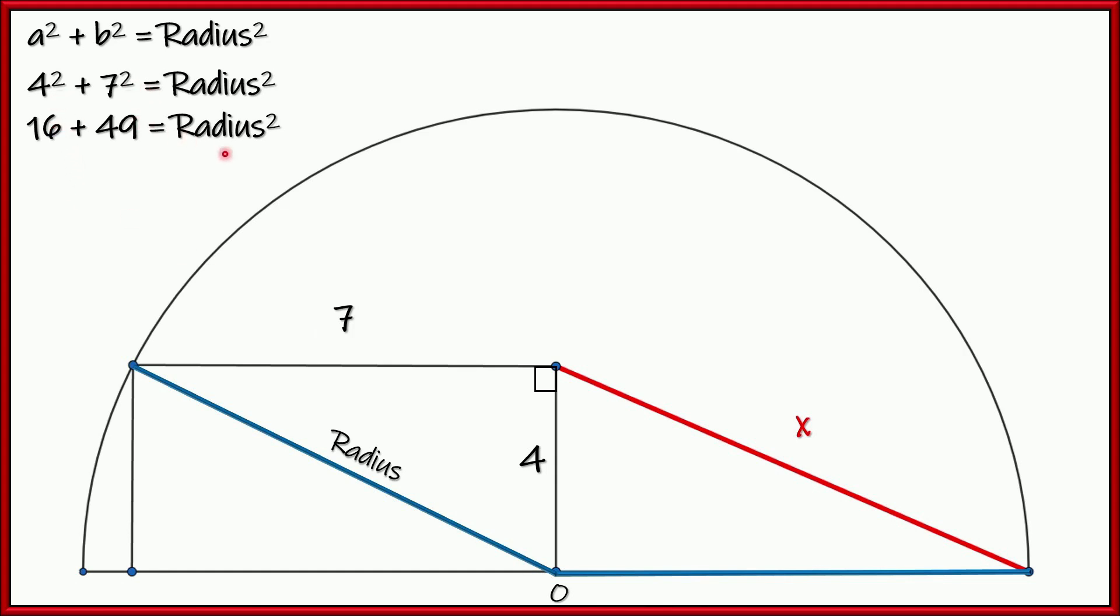7 squared is 49, so the radius squared is going to be the sum of those two things, which is 65. So taking the square root of both sides, I can find that the radius is the square root of 65. Now, that's the exact value. I could, you know, plug that into a calculator and get 8 point something, but let's not worry about that yet. Okay?